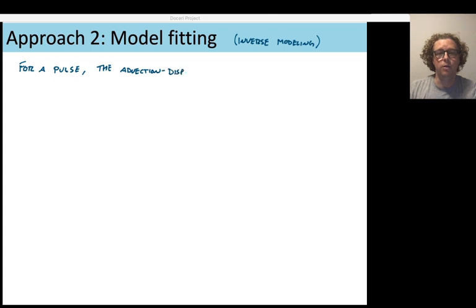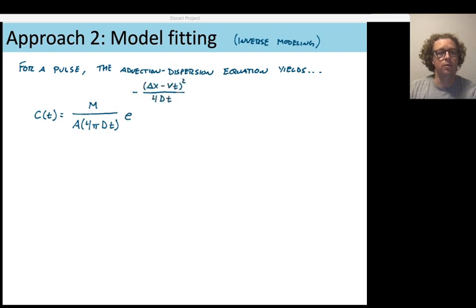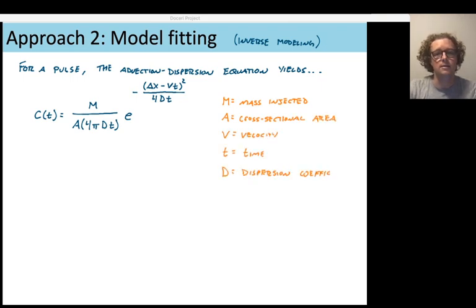So for a pulse injection, we can use the advection dispersion equation in a fairly simple application. So the time series of concentration c at a distance of delta x downstream can be calculated with the equation shown here. And in this equation, the m in the numerator is the mass that you injected. A is the cross-sectional area of the stream channel. V is velocity. T is time. And of course, D is that dispersion coefficient.